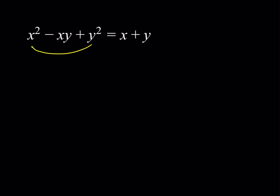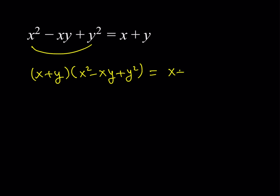If you multiply this expression by x plus y, it would look like: x plus y, multiplied by x squared minus xy plus y squared, and on the right-hand side, since you're multiplying x plus y by itself, it would just be x plus y quantity squared. The left-hand side simplifies because this is exactly x cubed plus y cubed — the sum of two cubes. So we have x cubed plus y cubed equal to x plus y quantity squared.